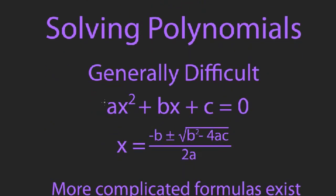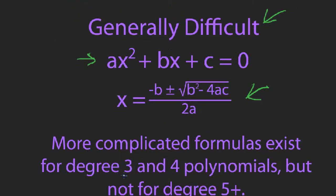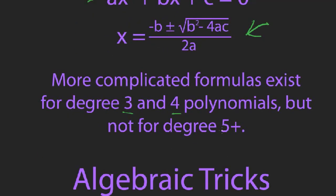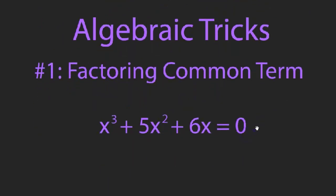Solving polynomials is generally difficult. For quadratics like x² + bx + c = 0, there's a formula derived by completing the square. There are also formulas for degree 3 and degree 4, but there are no formulas for degree 5 or more — and that's a proven fact, not just something we haven't figured out yet. This video will show algebraic tricks to solve higher-degree polynomials using only what you know about quadratics.